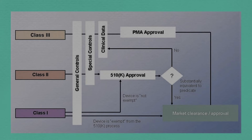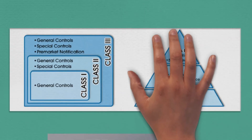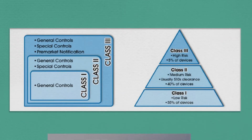Class 1, Class 2, and Class 3 devices all require general controls. Class 2 and Class 3 require general plus special regulatory control, and Class 3 devices require general plus special regulatory controls as well as pre-market approval. FDA has categorized more than 1,700 medical devices into these three categories. Nearly 55% of medical devices fall under Class 1, 40% fall under Class 2, and the remaining 5% fall under Class 3.